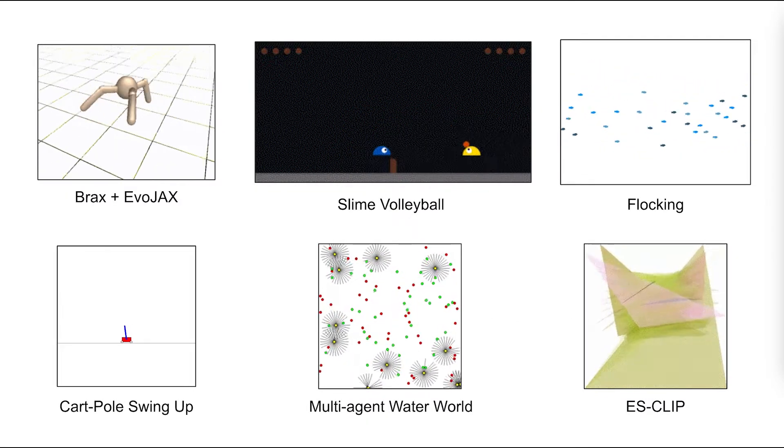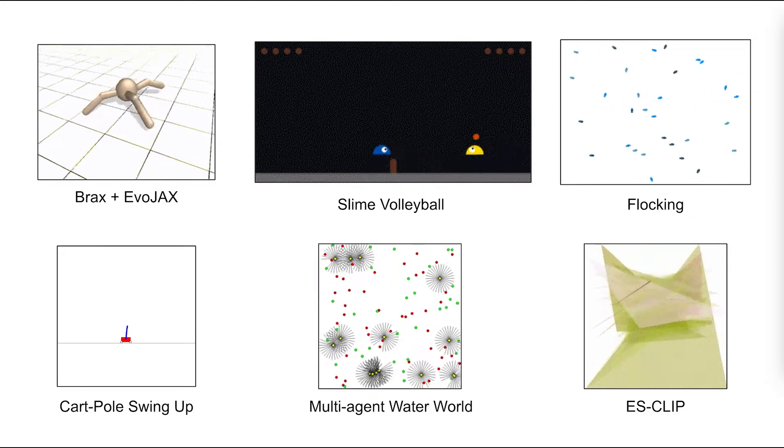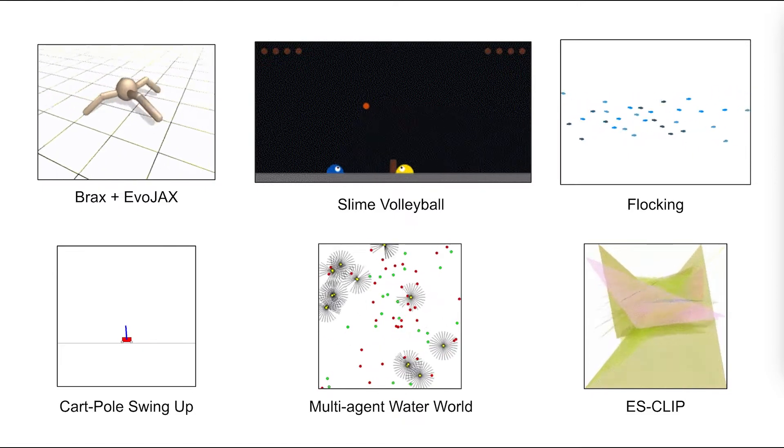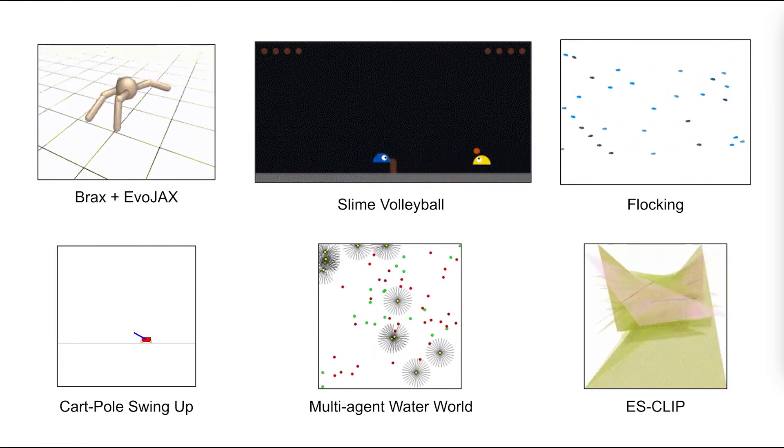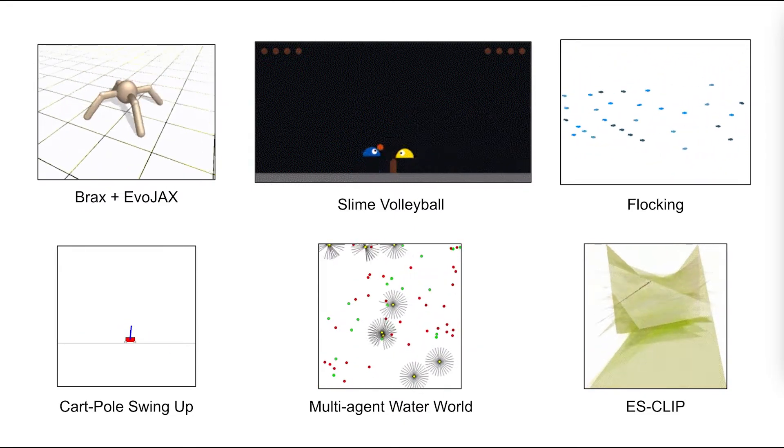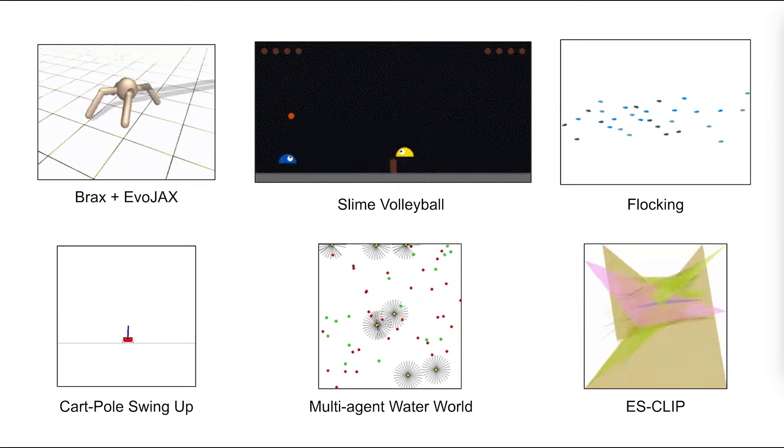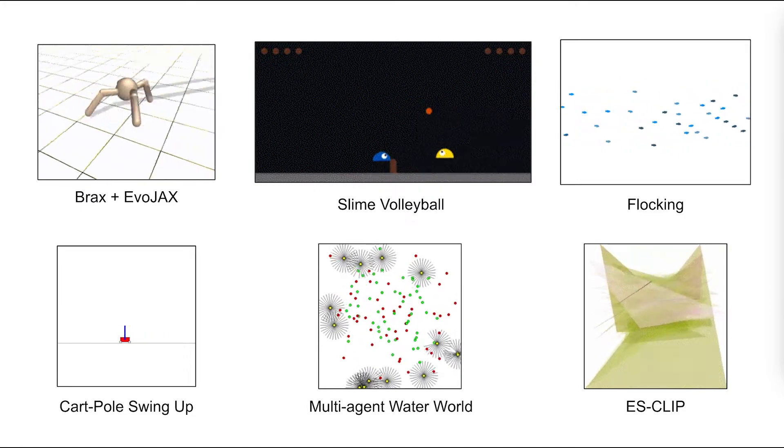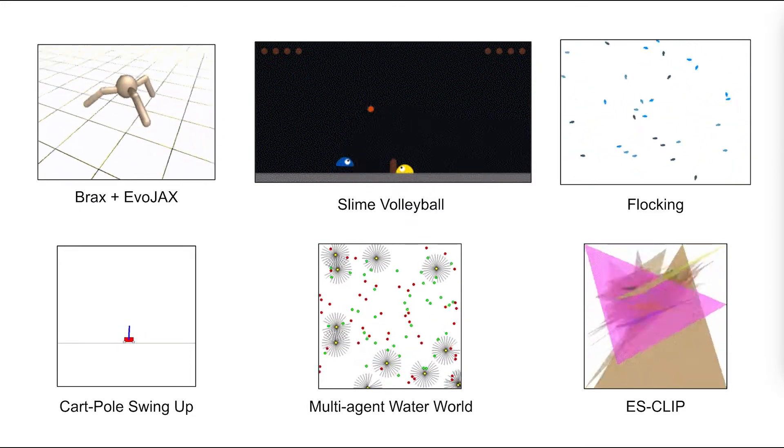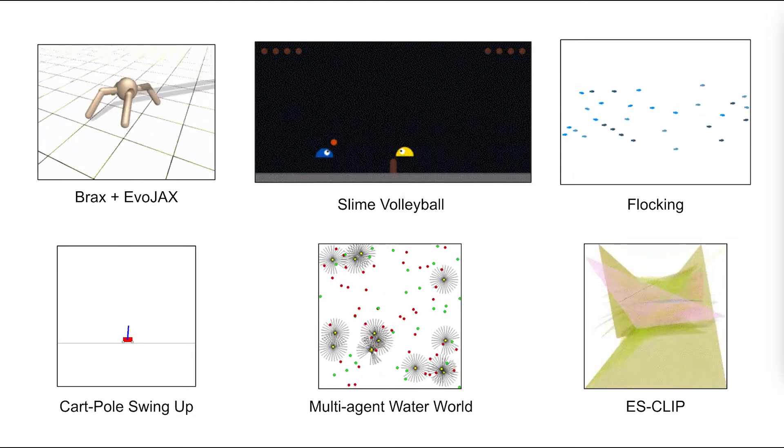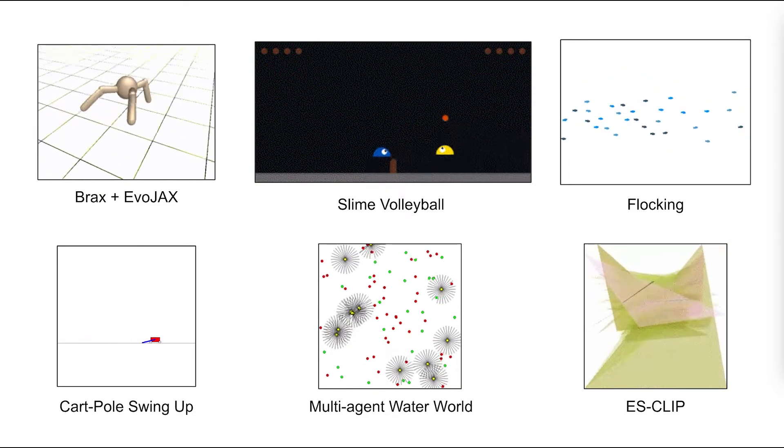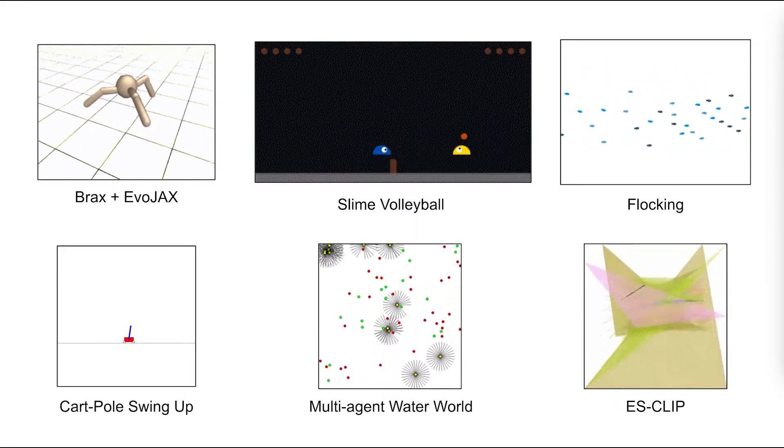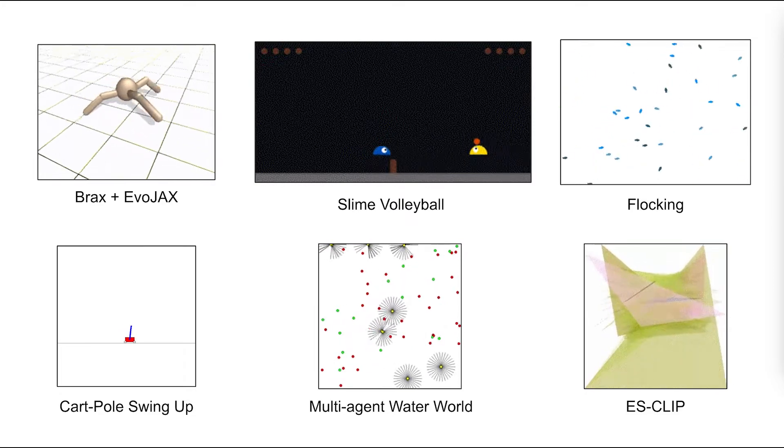On this slide, we highlight some tasks that EvoJax solves. On the left side, you see classical control tasks such as the cart-pole swing-up and the robotic locomotion tasks. With EvoJax, these tasks can be solved within minutes. In the middle column, we show that EvoJax allows training of multiple agents. This is of special interest to researchers in the area of artificial life and collective intelligence. Finally, we also show on the bottom right a novel task where we generate creative artworks with text prompts and only triangles.